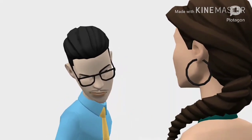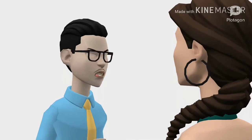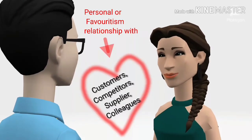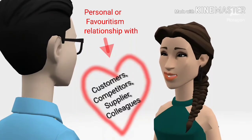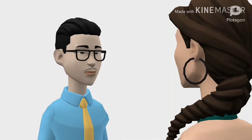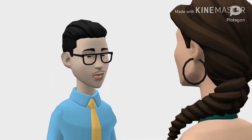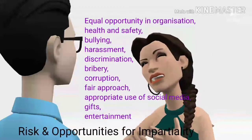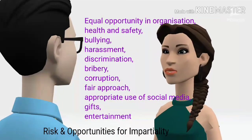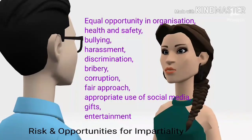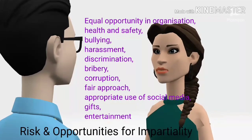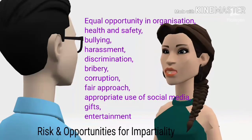Which type of situations and relationships can affect impartiality? Personal or favoritism relationships with competitors, suppliers, colleagues, and customers may violate the impartiality clause. What are the other parameters which may lead to impartiality violation? Equal opportunity in the organization, health and safety, bullying, harassment, discrimination, bribery, corruption, fair approach, appropriate use of social media, gifts, and entertainment.